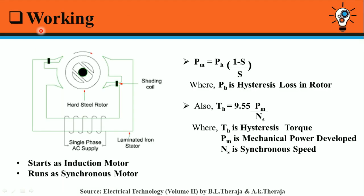Working of hysteresis motor. At start, when single-phase AC supply is provided to the motor, the field winding starts producing magnetic flux in the air gap. The magnetic axis shifts from the unshaded region of the pole to the shaded region of the pole, which gives a rotating field effect that acts as a starting torque on the motor.